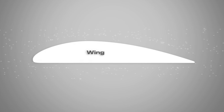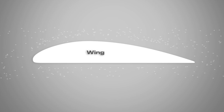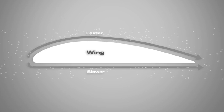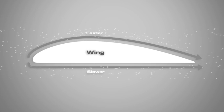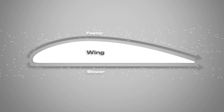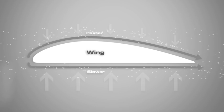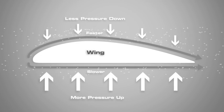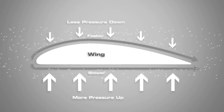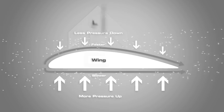A wing is curved on the top and flat on the bottom. So when a wing moves through the air, the air on top of the wing has to travel faster than the air under the wing. Because the wing is curved on the top, the air moving over the top must travel further and faster than the air under the wing to get to the same place. This causes a decrease in the pressure on the top of the wing. The pressure difference from the top and bottom of the wing causes a vacuum effect and the wing is pulled upward in lift.